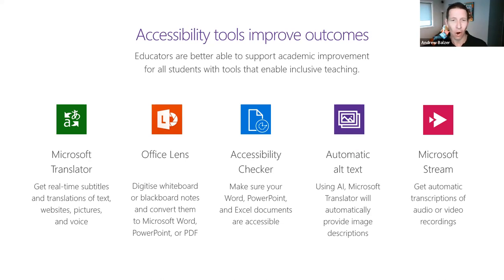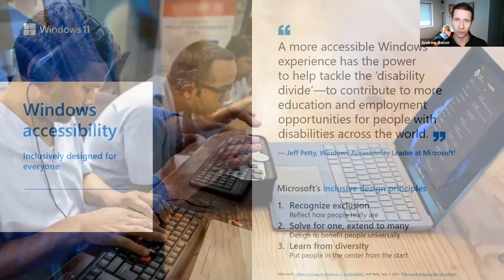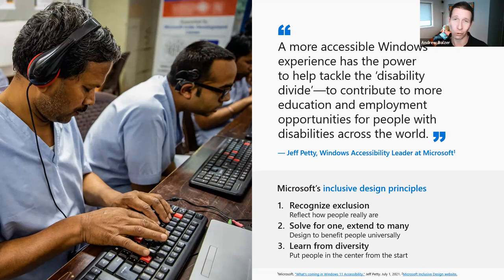We're going to start with Windows, as that's your core OS. I understand there are some Mac users, but Windows is the dominant operating system. I'm going to showcase how language and communication can be powered through Ease of Access. If you're on Windows 10, that's called the Ease of Access Centre. If you're on Windows 11 — which most people will upgrade to — it's the Accessibility Centre. Don't stress — they are the same; Windows 11 just adds more functionality.